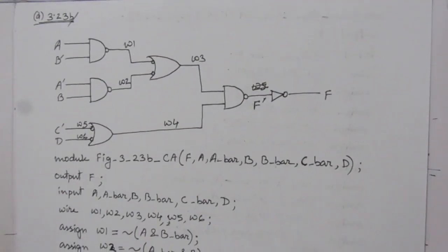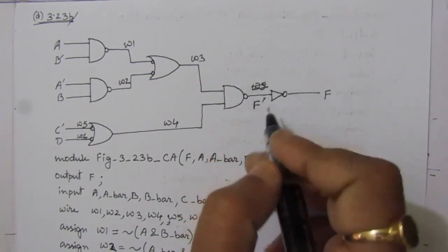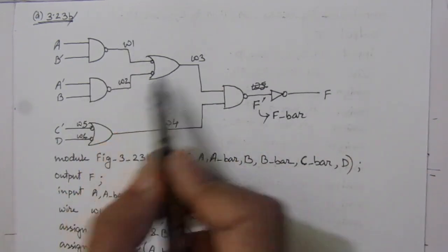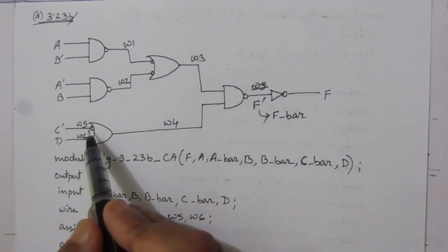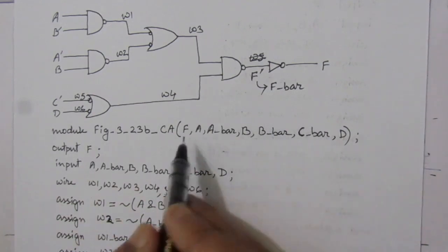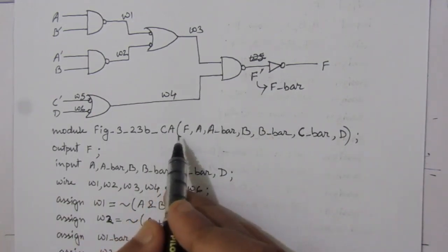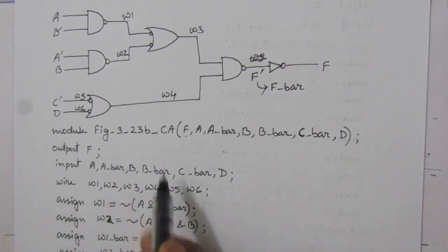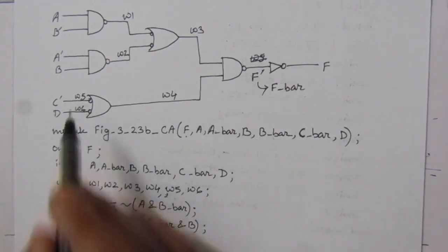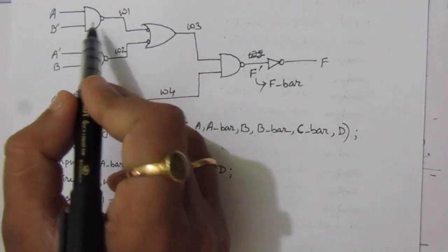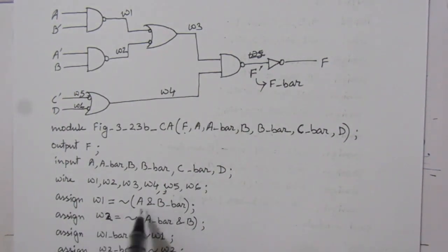In the fourth part of the problem, we have this circuit where the output is F-bar. We have wires W1, W2, W3, W4, and also W5 and W6 because we have inverted inputs on the input side. The module uses CA for continuous assignment, with F as output and the corresponding inputs. We define wires W1 through W6. W1 is the NAND operation between A and B-bar: NOT of (A AND B-bar). W2 is similarly the NAND of A-bar and B.